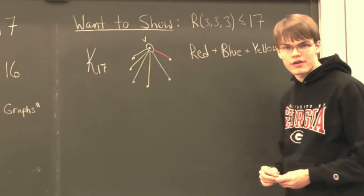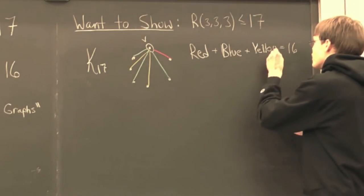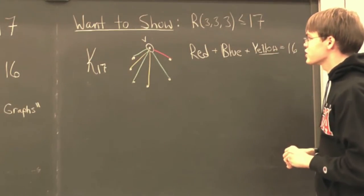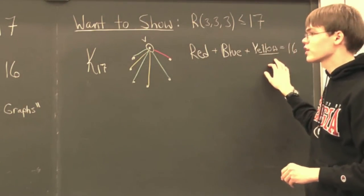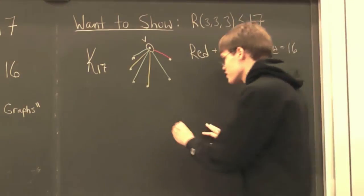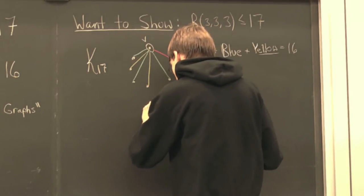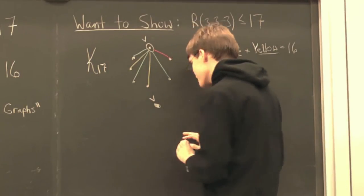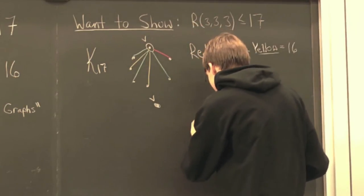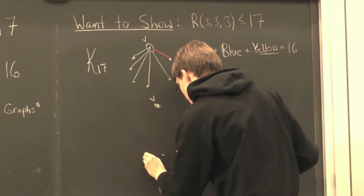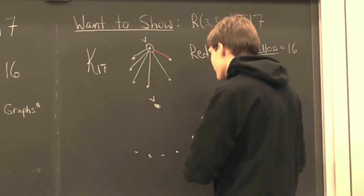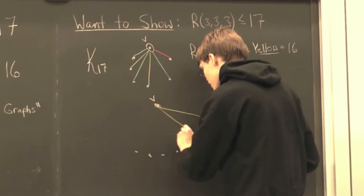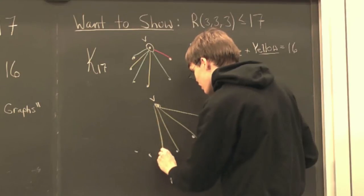And so, without loss of generality, let's assume that at least six of these edges are yellow. So, what that means is, we have our vertex V up here. And now, we have at least six vertices down here. And they're all connected to V via a yellow edge.